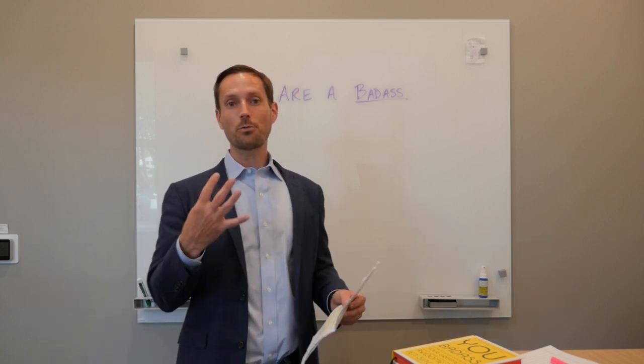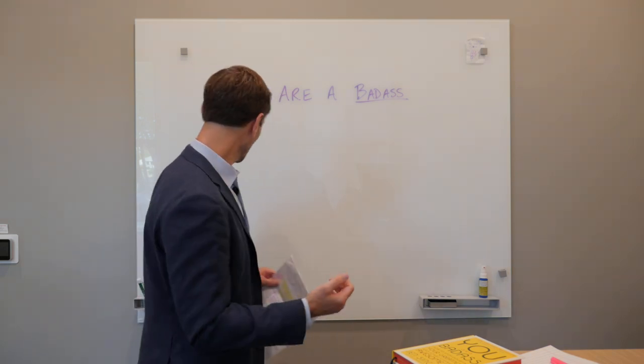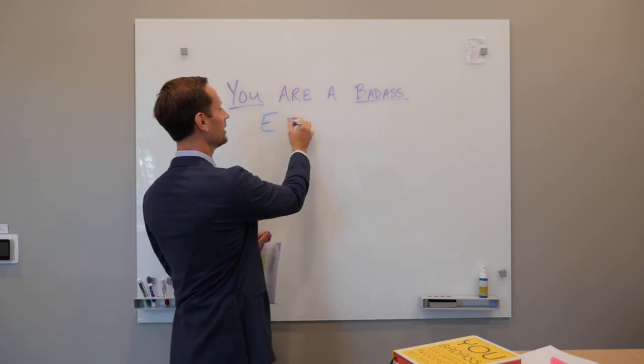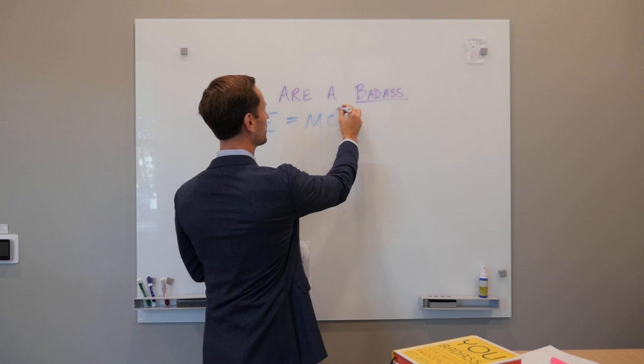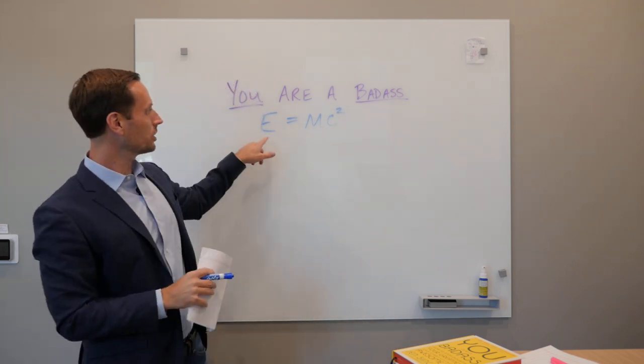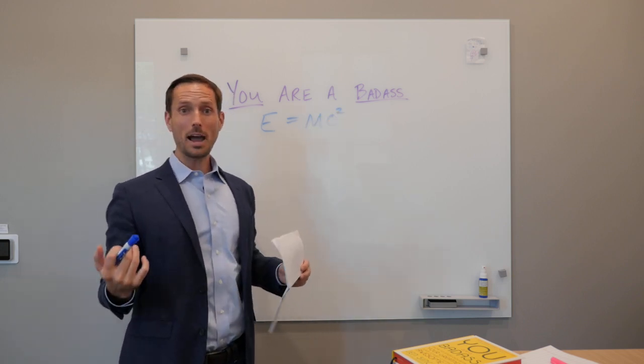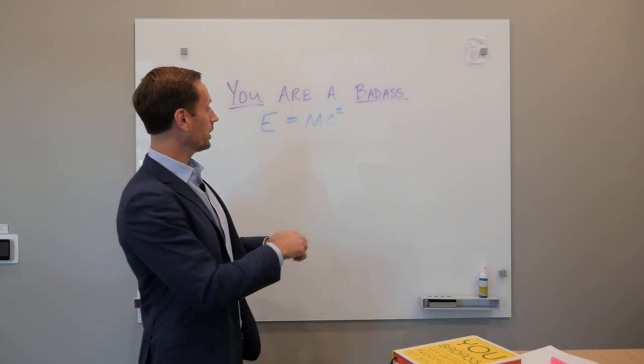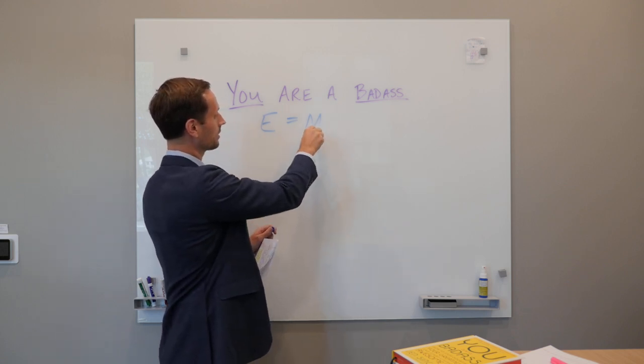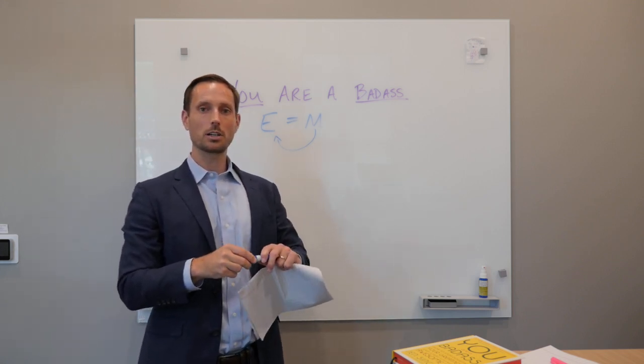I just want to name four things that really had a big impact on us, and the first is Einstein. Einstein, E equals mc squared. What this equation means is energy equals mass times the speed of light squared. Big math equation, but what it really means is that mass equals energy divided by the speed of light squared.